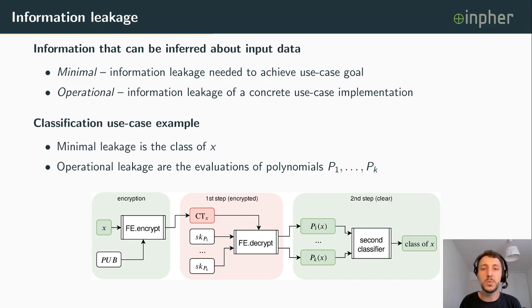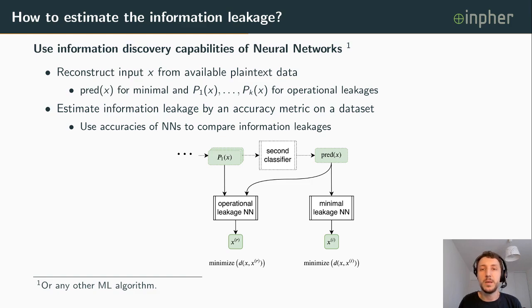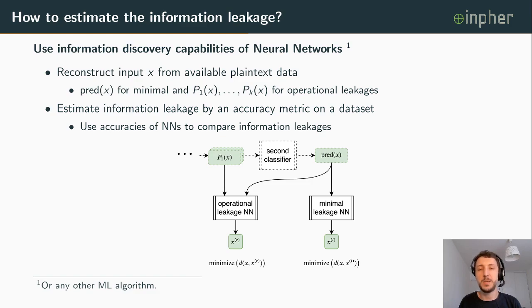To study what information can be inferred from these evaluations, we use the information discovery capabilities of neural networks — a neural network is used to estimate information leakage by reconstructing input X from the available plaintext data. For minimal leakage, only the prediction of X is fed as input to the network; for operational leakage, the polynomial evaluations P1 through PK over X are used as input.